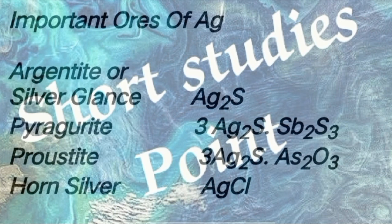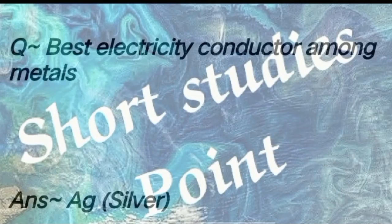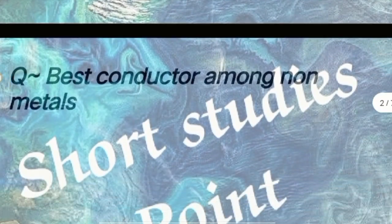Continued silver ores: Polyargyrite (3Ag2S·As2S3), Chlorargyrite (AgCl). Next question: Best electricity conductor among metals. Answer: Ag (Silver).